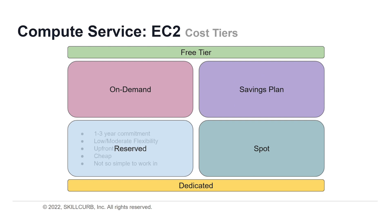Next, we have reserved plans in AWS. Reserved plans provide a discounted hourly rate and an optional capacity reservation for EC2 instances. AWS billing automatically applies discounted rates when your EC2 instance usage attributes match those of an active reserved instance. Like savings plans, reserved instances require a one to three year commitment, have low to moderate flexibility, and require an upfront payment. They're cheap like savings plans, but can be a little tricky to work with.